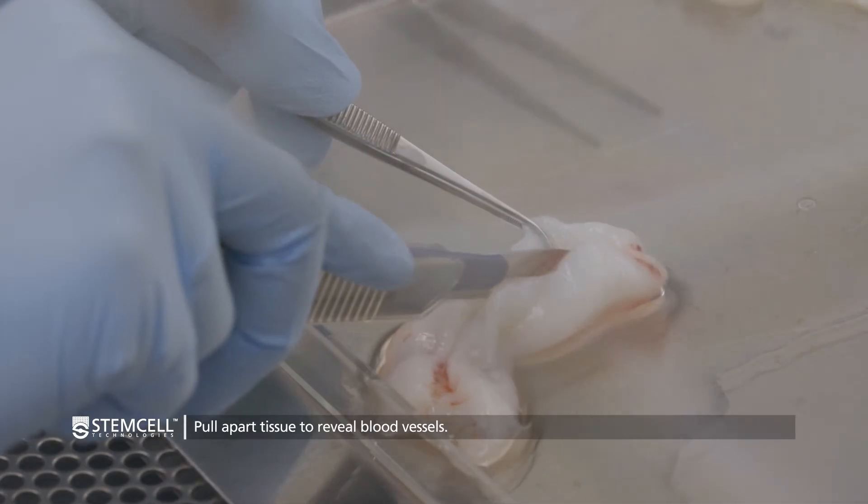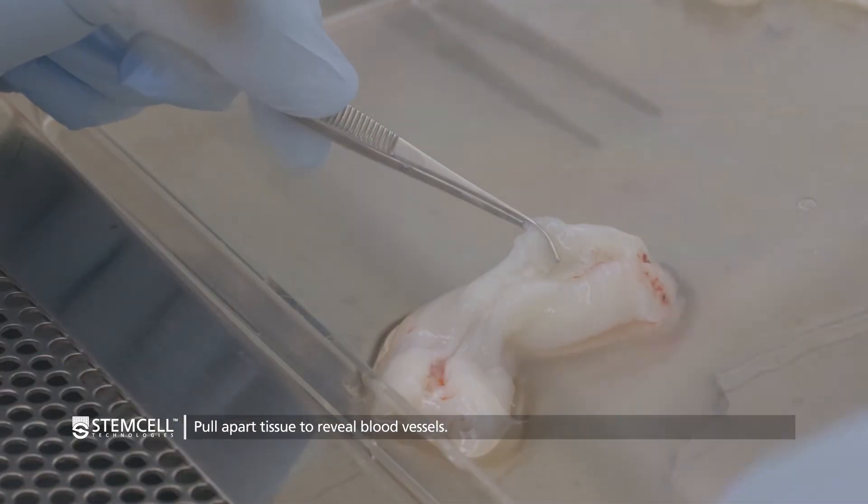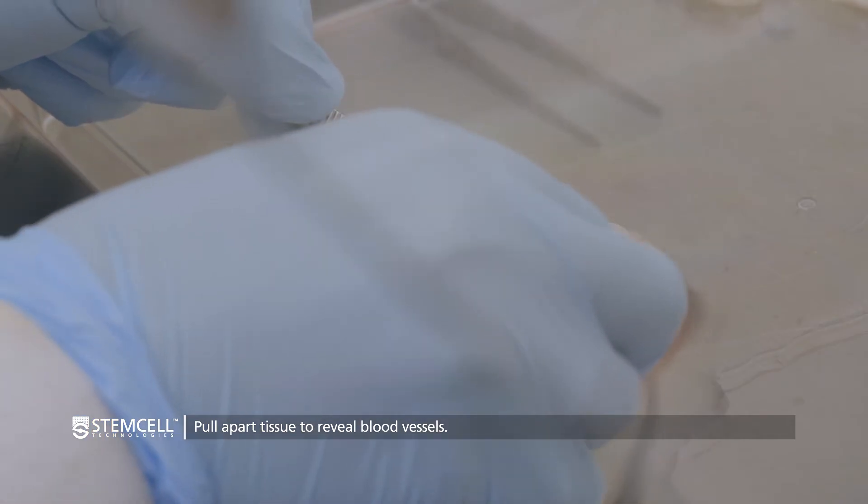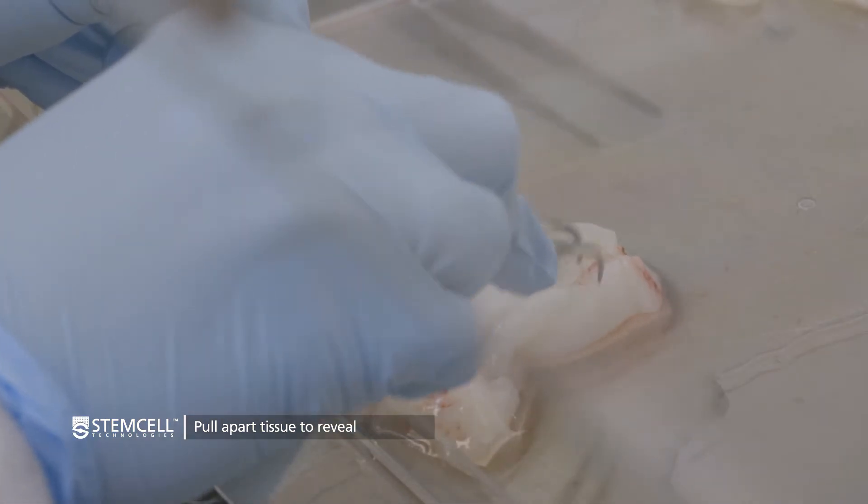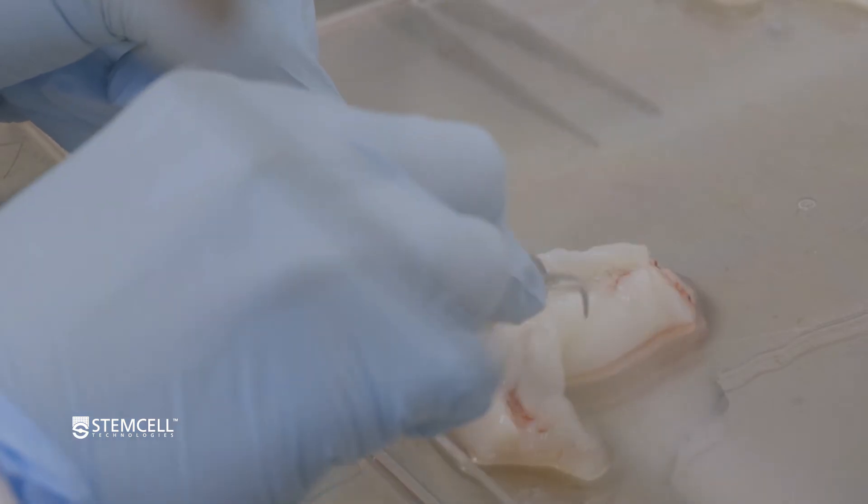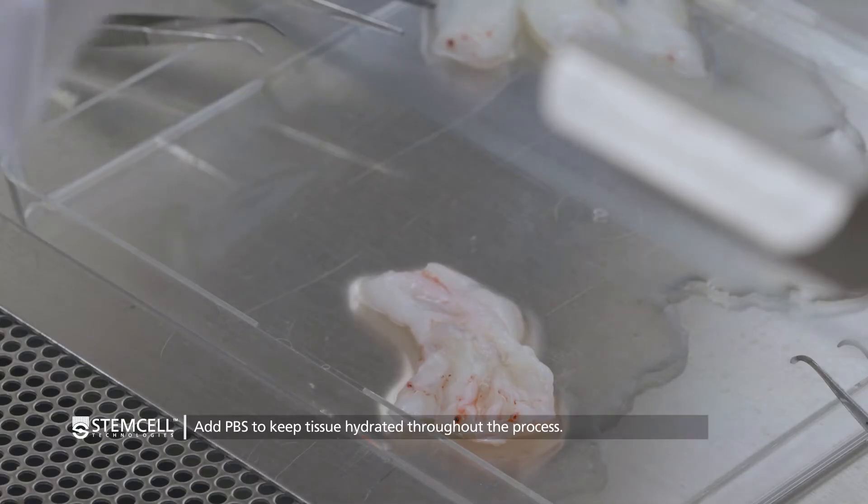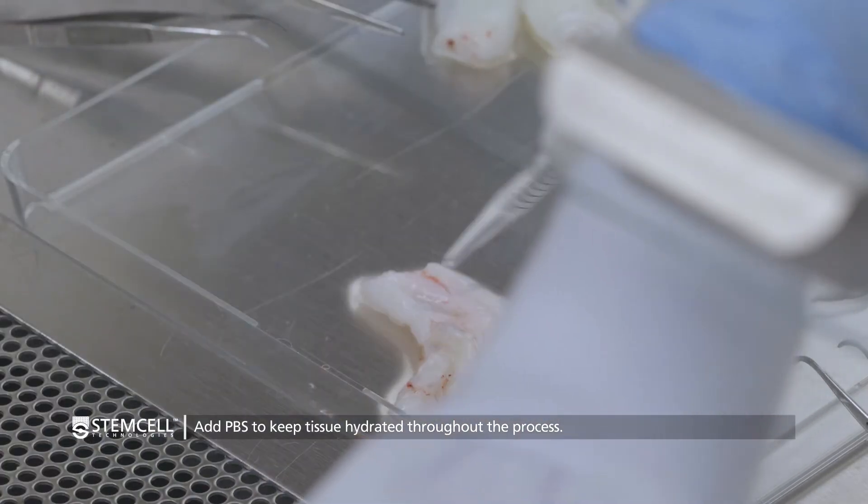Do this one section at a time. After the incision is made, the tissue can be pulled apart to reveal the vessels. This requires some force as the tissue is tough connective tissue. Throughout this process, add PBS as needed to keep the tissue hydrated.